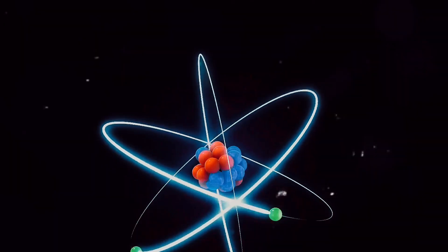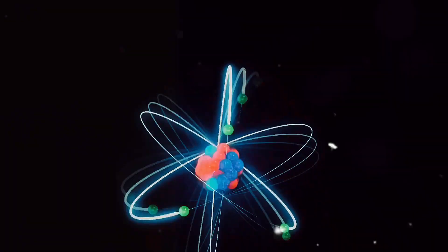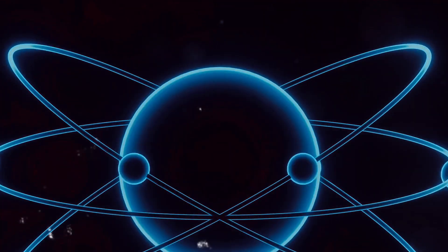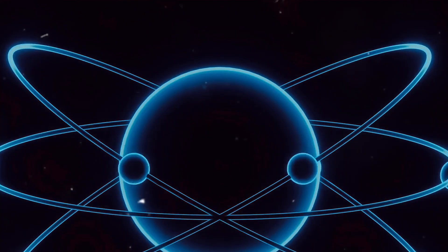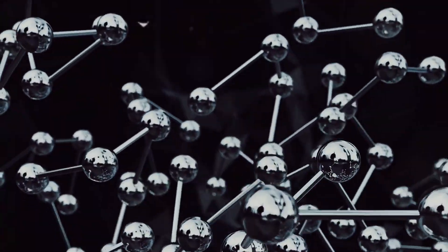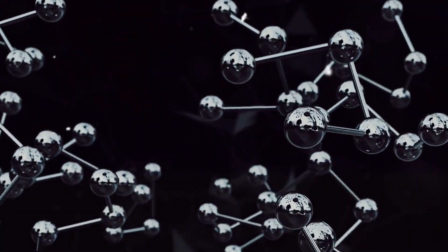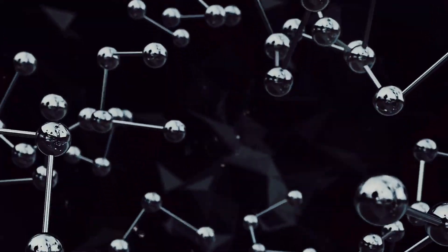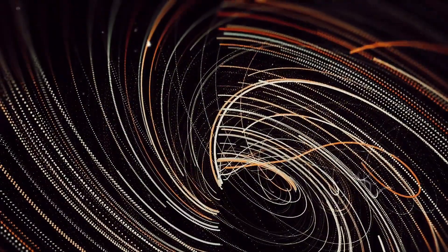Now, you might be wondering, how does this force manage to keep these electrons apart? Well, it's all about the balance of power. The electromagnetic force is incredibly strong. In fact, it's about a thousand trillion trillion trillion times stronger than gravity. Yes, you heard that right. This force is what keeps electrons in their orbits, tirelessly spinning around the nucleus of an atom, never quite touching their neighboring electrons.